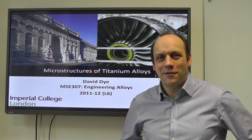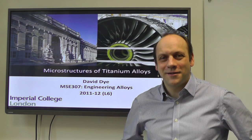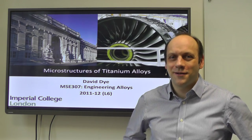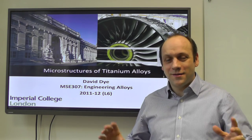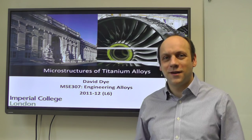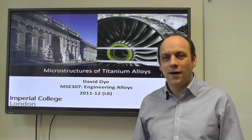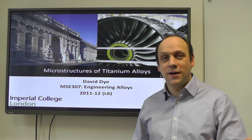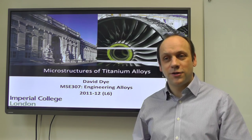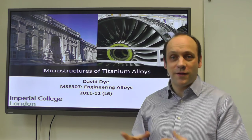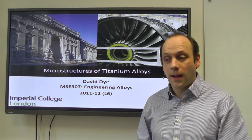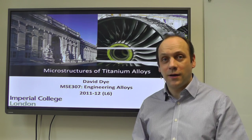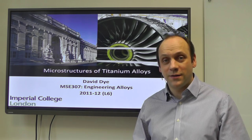Welcome to lecture six in this series - the second lecture on titanium alloys. In the first lecture we looked at the phase metallurgy of titanium alloys: its production, the phases, the phase diagrams, and the effect of different alloy elements including alpha and beta stabilizers.